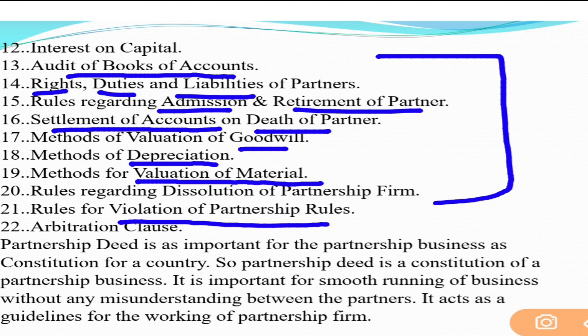Apart from these, many other things can also be decided in advance. For example, if there are four or five partners, who will be the authorized signatory for the bank account cheque — that too should be decided in advance. Also, whether a minor is to be admitted as a partner or not — that should also be decided in advance.